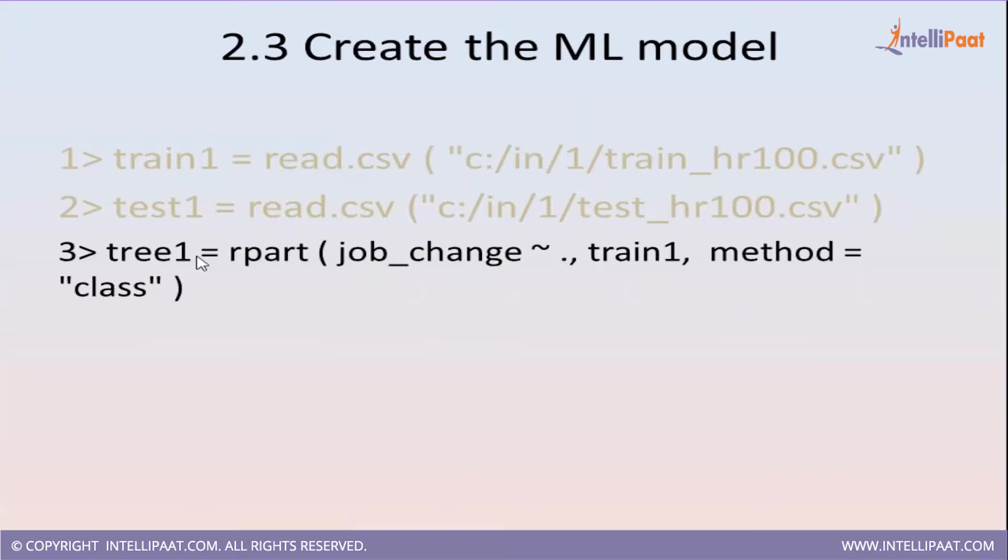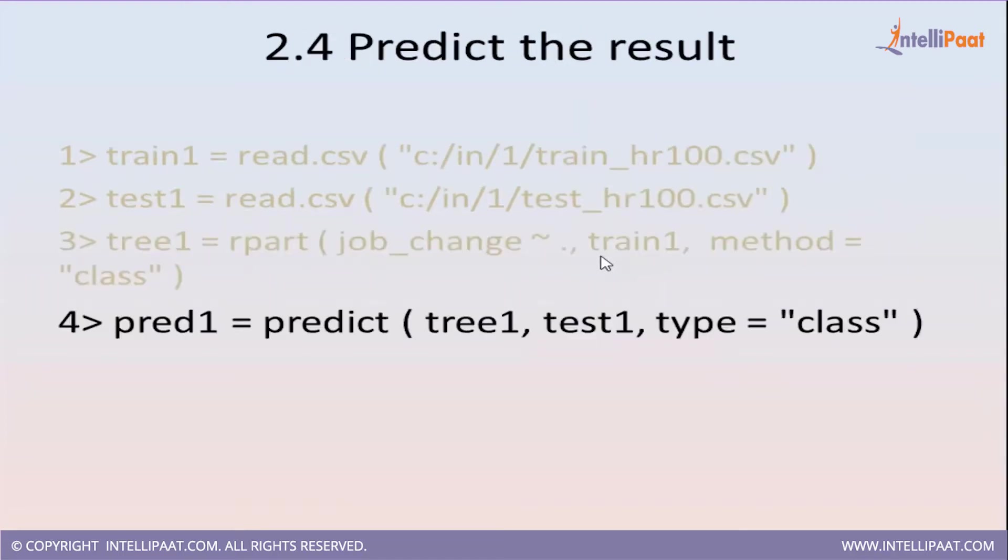This way I will create a variable called tree1. This is the tree which has all the learning from the records in training1. Then I will move to the next step: predict1. Use the predict function with help of the tree which we have just built. Use the test data and apply this learning and do the prediction. This is how in four steps we can perform the whole machine learning.